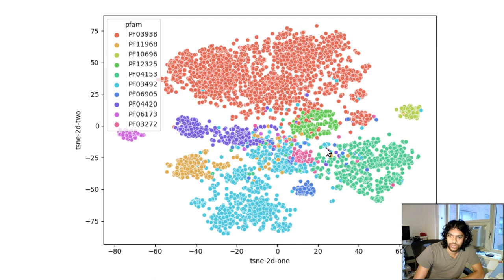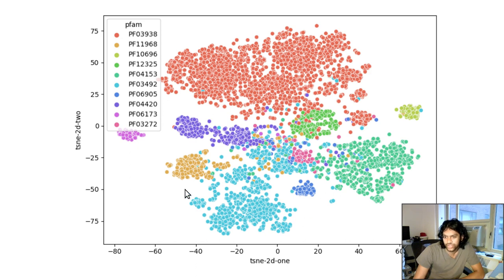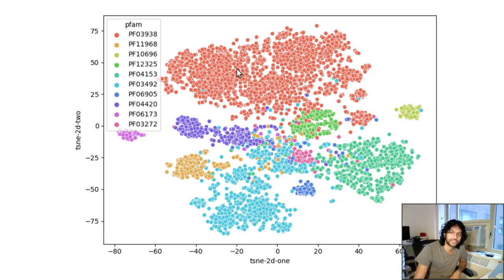The first step is getting the protein sequence features by extracting language model features of those 10 protein families we're interested in clustering. We have a t-SNE plot where we can see good separation generally between the protein families. It's not perfect, but we can say that a neighbor in this feature space is going to most likely have the same protein family.